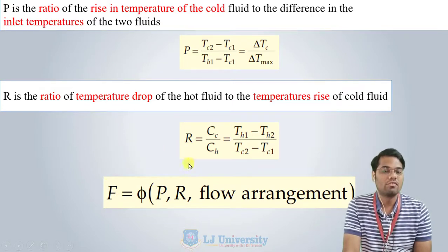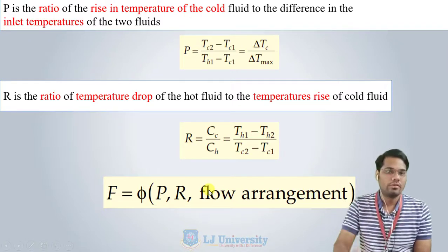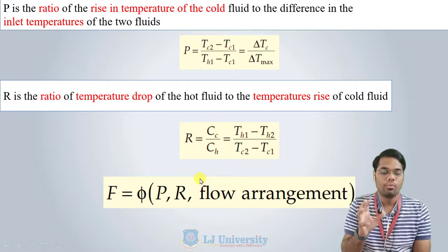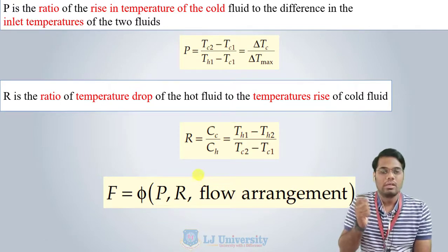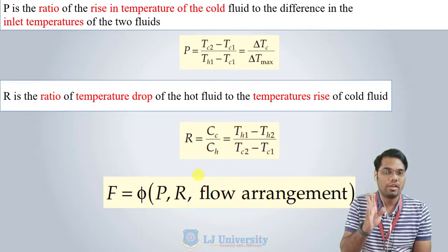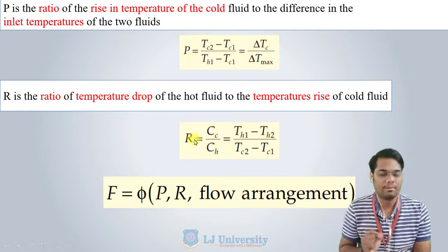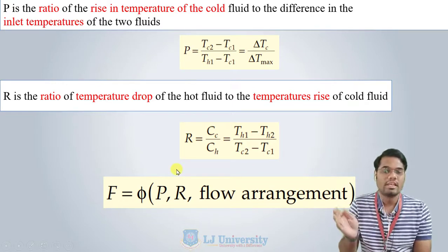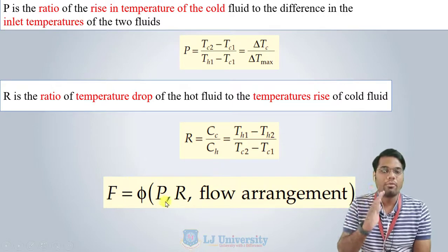The correction factor F is a function of P, R, and the flow arrangement. Different charts are available for different configurations. If we know all four temperature values — TH1, TH2, TC1, TC2 — we can first calculate P and R, and then read the value of F from the appropriate chart according to the flow arrangement.